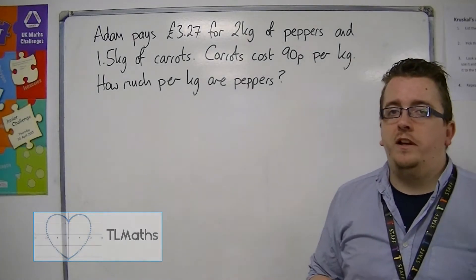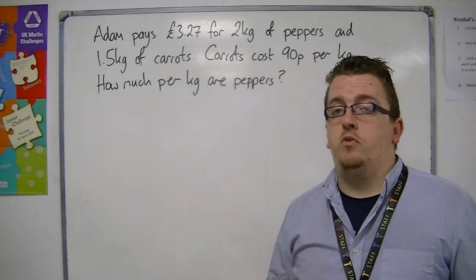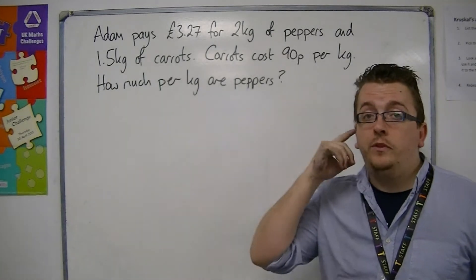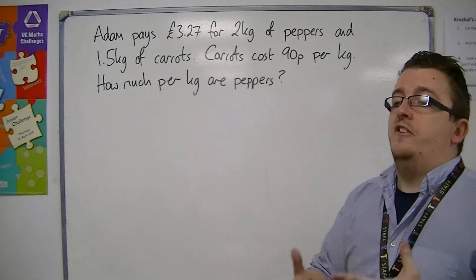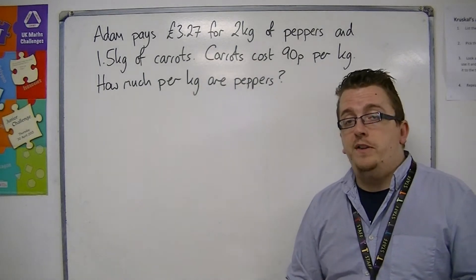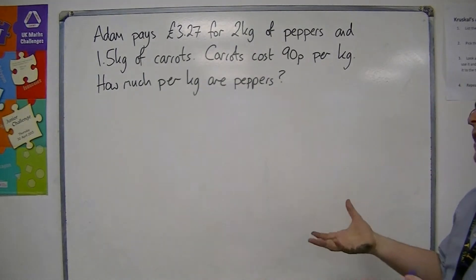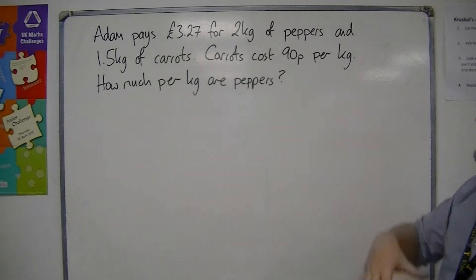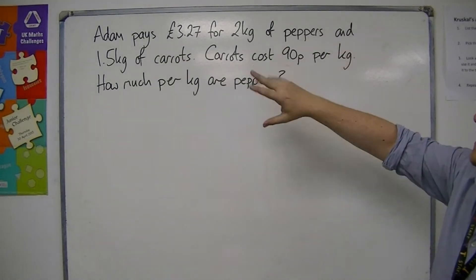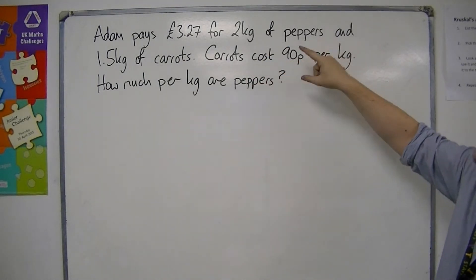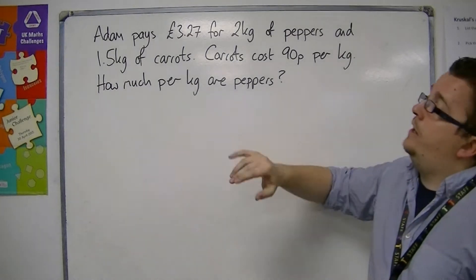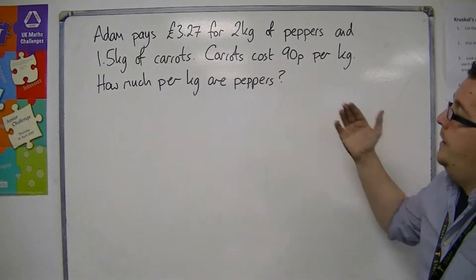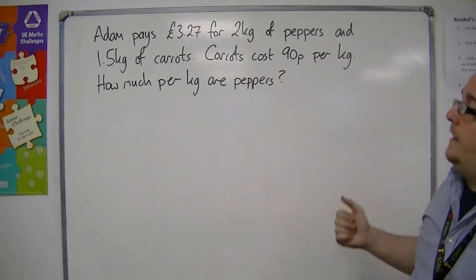Day-to-day life questions can include spending problems. For example, just going down the shop and buying some items, and understanding whether you have enough money to be able to buy those items. A question like this: Adam is doing his grocery shopping. He pays £3.27 for 2 kilos of peppers and 1.5 kilos of carrots. Carrots cost 90p per kilo. How much per kilo are the peppers?